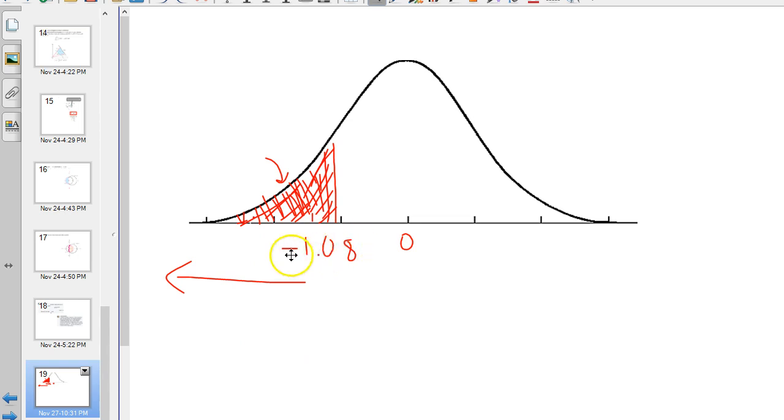So our test statistic tells us where we're starting from, and we're looking for the area of everything to the left of that. So that area is what we're looking for. That's the p-value. And the way that we are going to find that p-value is use the normal calculator on StatCrunch.